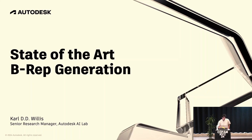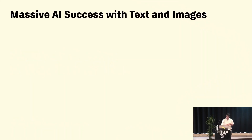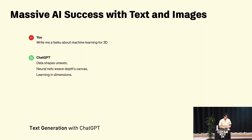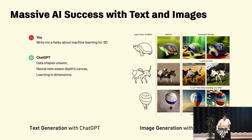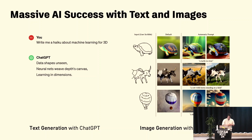To set the scene: over the last couple of years we've seen massive successes with text and image generation. If we ask ChatGPT to write a haiku about machine learning in 3D it can do a pretty good job, or if we use something like ControlNet to generate images from a prompt and a sketch, it can do really impressive things. This is largely because there have been these massive datasets of text and images scraped from the internet.